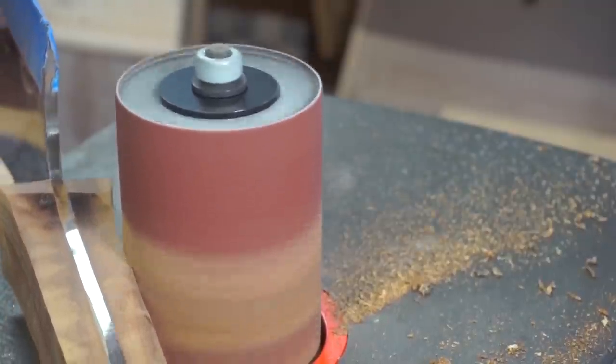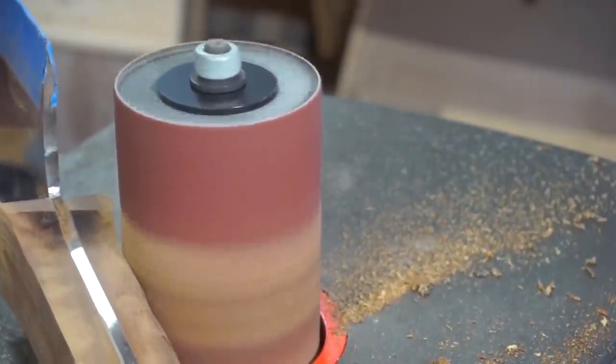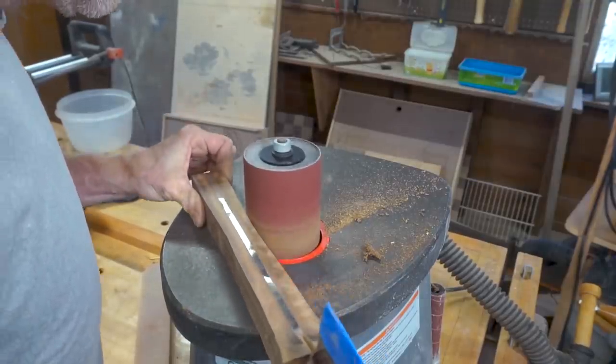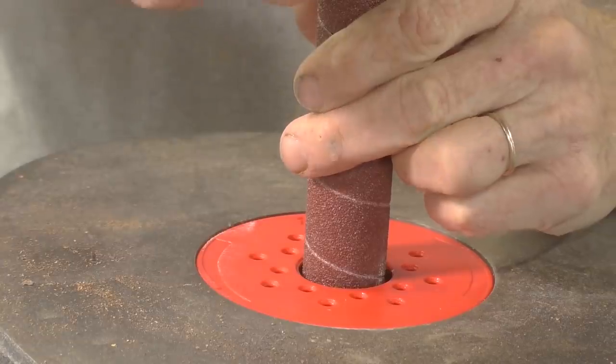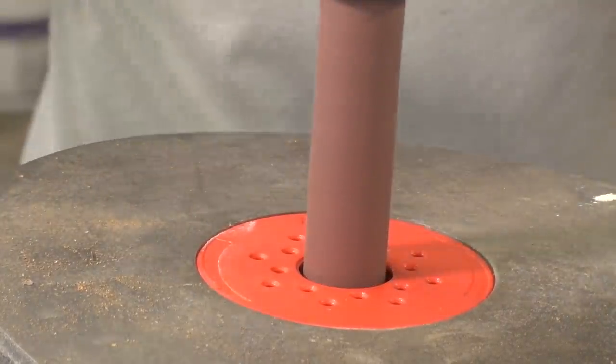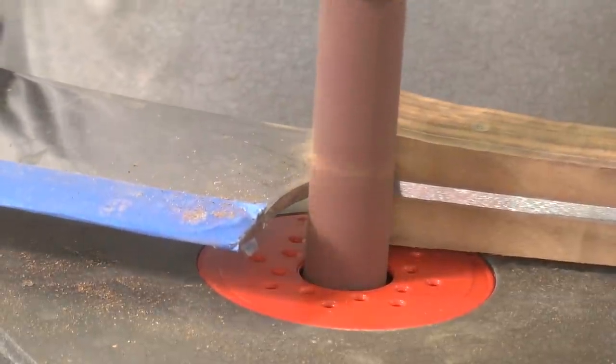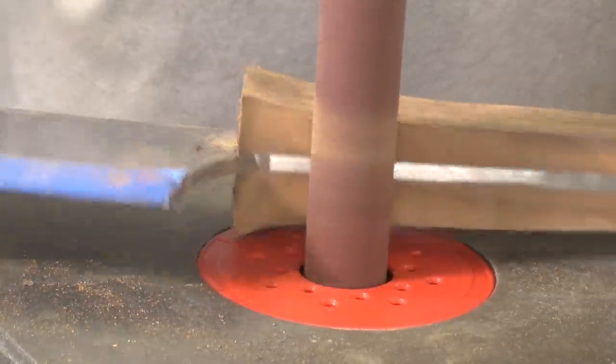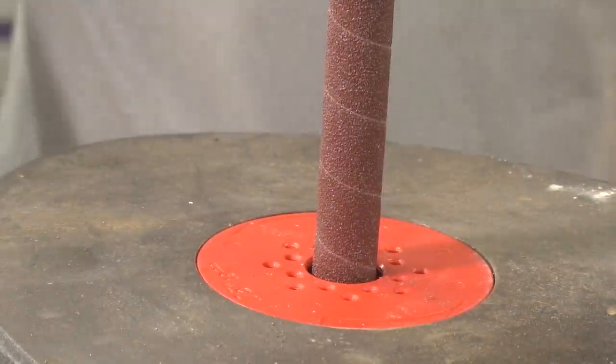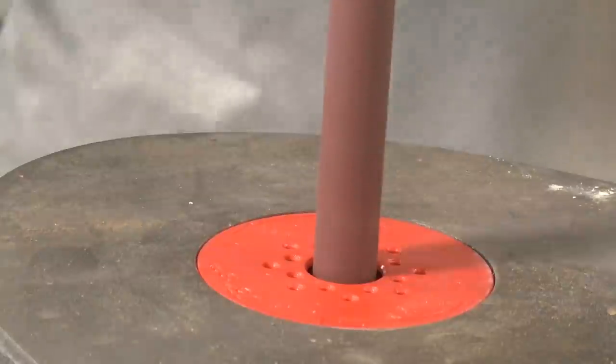This knife does not have a bolster so I'm shaping the wood to be a little bit thicker toward the heel of the blade and that will help to minimize the chance of the hand slipping and coming in contact with the blade. And toward the end, I switched to a drum with a smaller diameter to get into this tight radius.